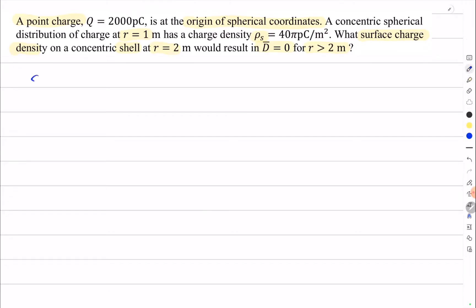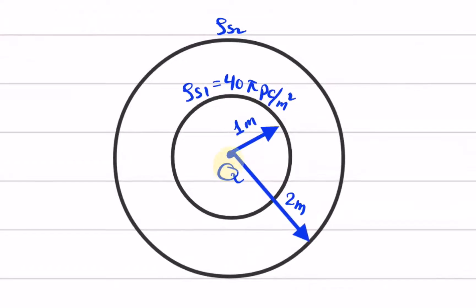Let's draw this problem. We have a point charge at the origin and a concentric charge distribution at r equal to one meter with ρ_s1 equal to 40 picocoulombs per square meter.